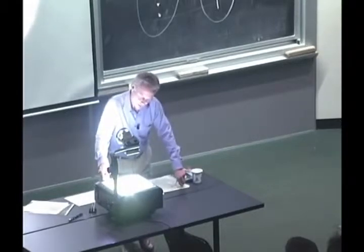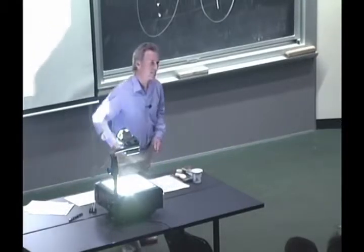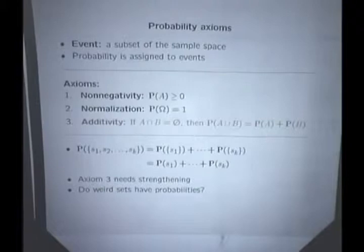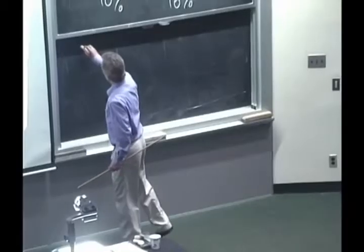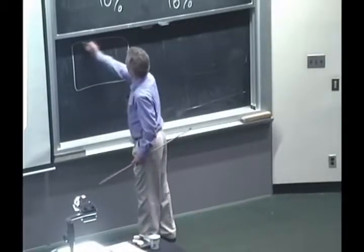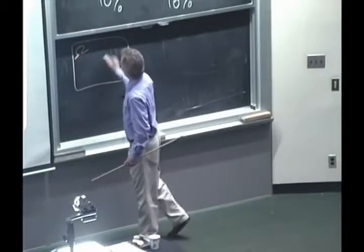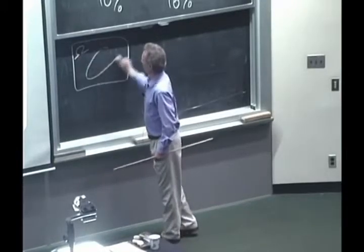For that reason, what instead we're going to do is to assign probabilities to subsets of the sample space, as opposed to assigning probabilities to individual outcomes. Here's the picture. We have our sample space, which is Ω, and we consider some subset of the sample space, call it A.